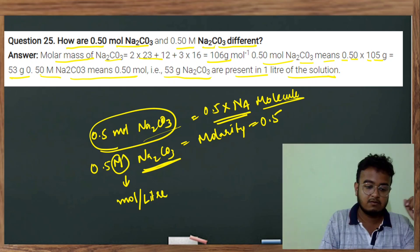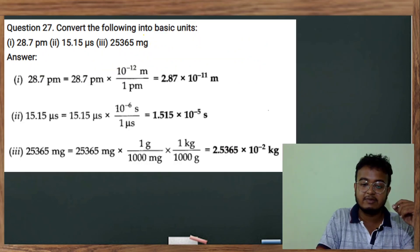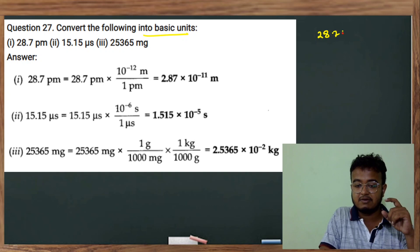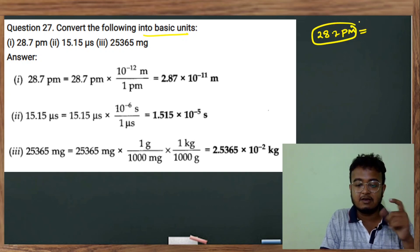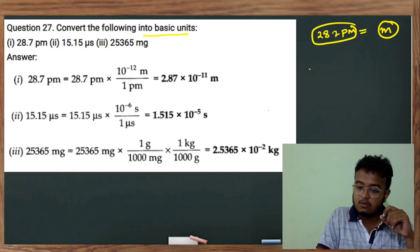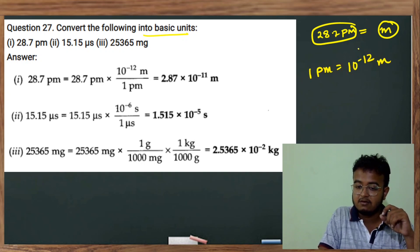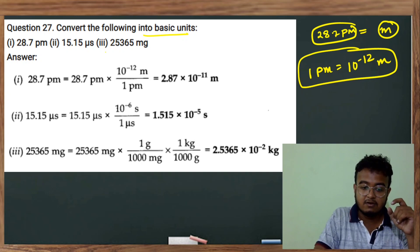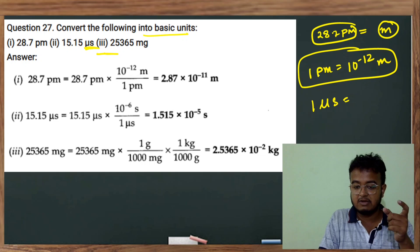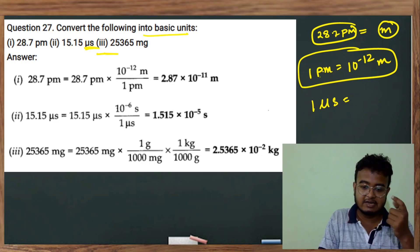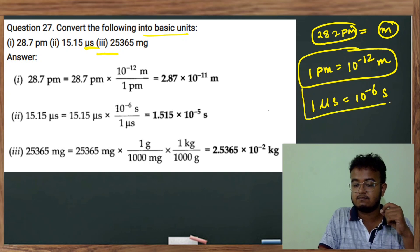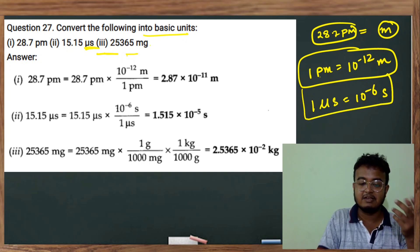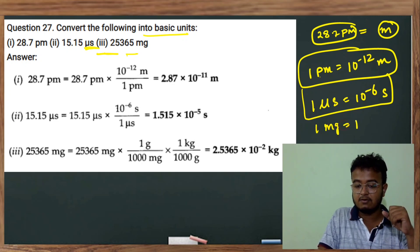Following the basic units: the basic unit is 28.7 picometres. 1 picometre equals 10 to the power minus 12 metres. Micro is 10 to the power minus 6. m is milli, which is 10 to the power minus 3. So 1 mg equals 10 to the power minus 3 grams.